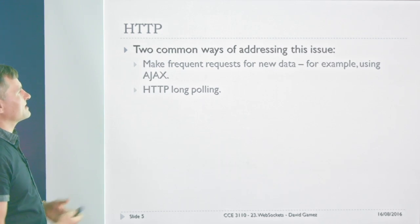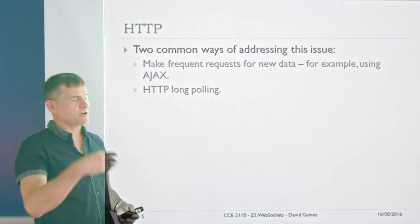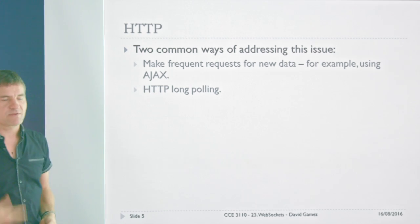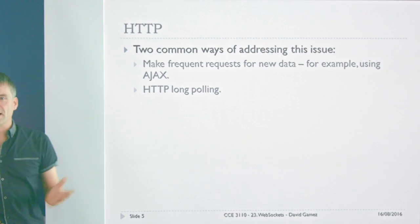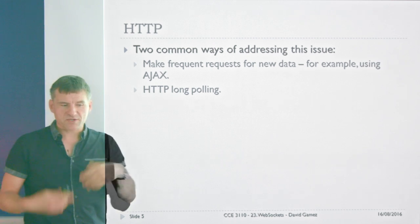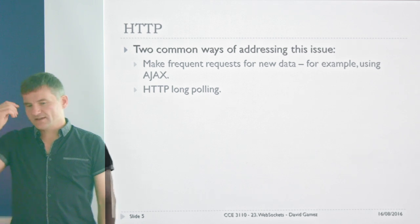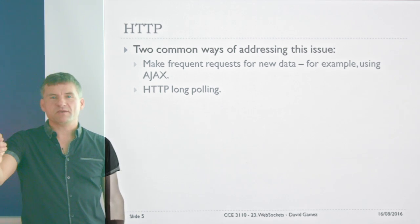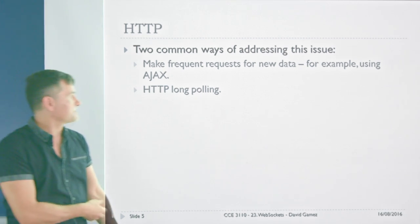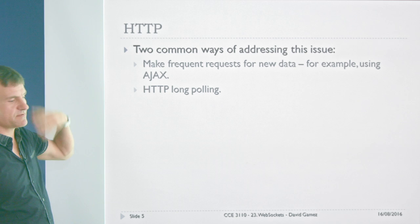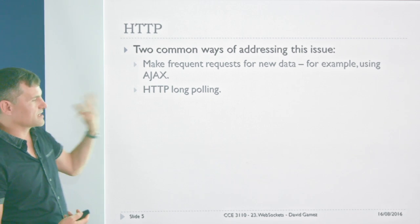So how can you handle that with HTTP? Traditionally there have been two approaches. First, you can constantly make requests — send lots of frequent requests for new data using Ajax. With the email example, the client sits there with JavaScript and every second sends an XMLHttpRequest to the server asking if there's any more data, and then the server sends back any new emails that have arrived. Of course, that's quite expensive in terms of using up the client's and server's resources as they process all these requests.